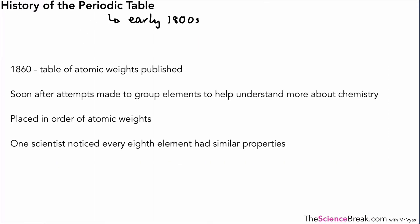The majority of the work really started in the early 1800s where elements were starting to be discovered and scientists were looking for a way to group them and classify them in order to learn more about chemistry. Around about 1860, there was a table of atomic weights that were published and these were found out by various experiments that were done.